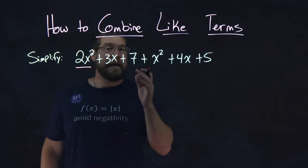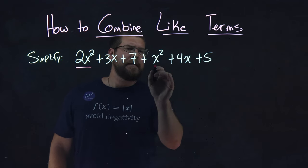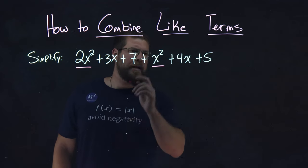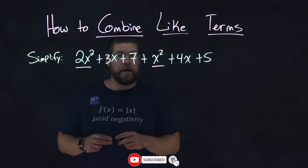Another like term is something else that has an x variable squared. That's going to be this 1x squared. I don't see anything else that has an x squared on it.